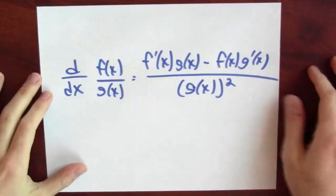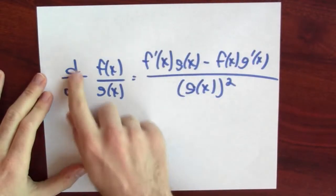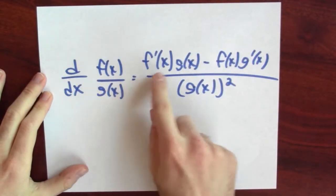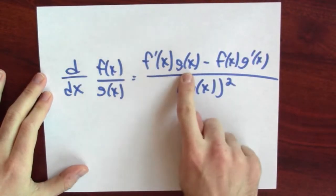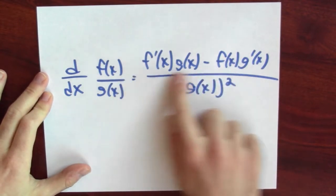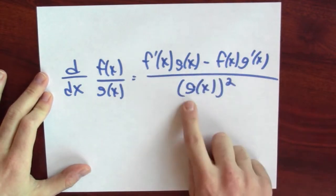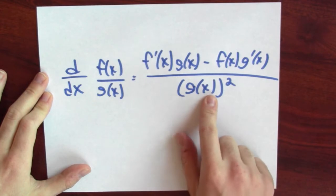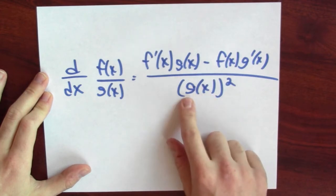How do we prove the quotient rule? First, we should remember what the quotient rule says. It says the derivative of f over g is the derivative of f times g minus f times the derivative of g, all over the value of g — not the derivative of g — just g of x, squared.